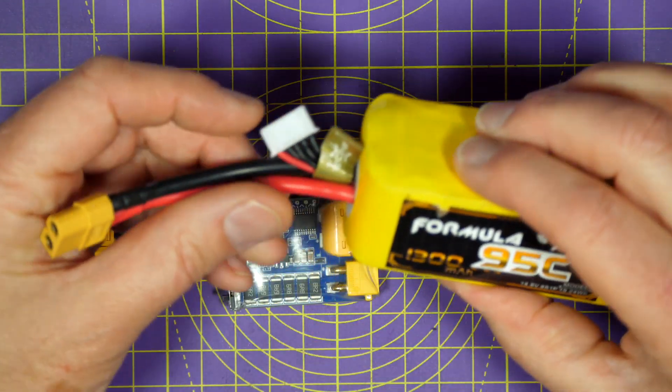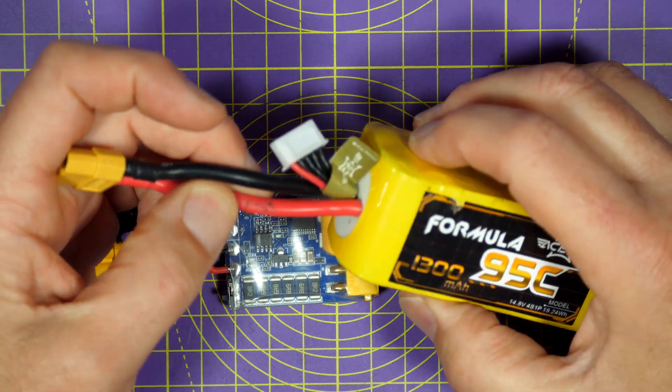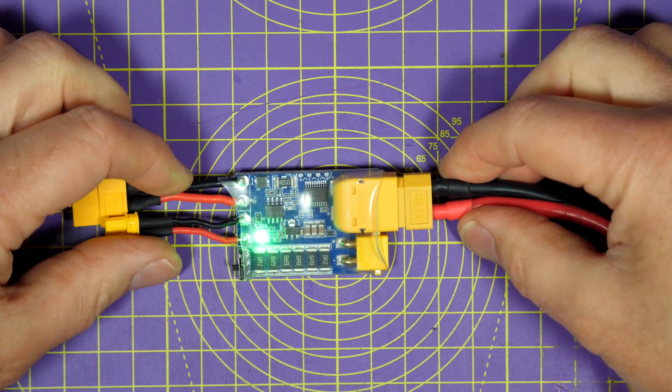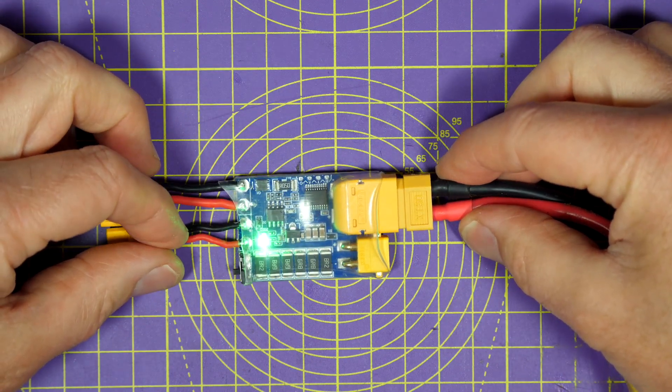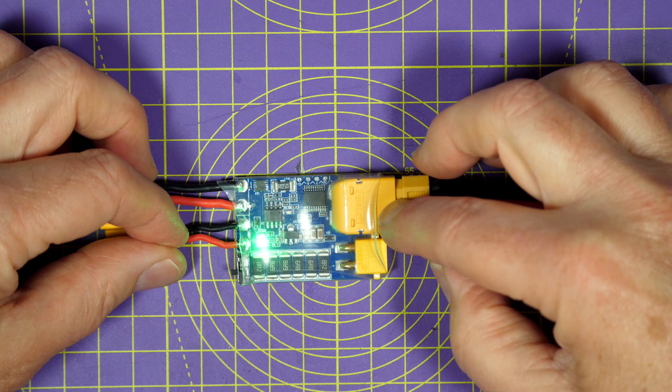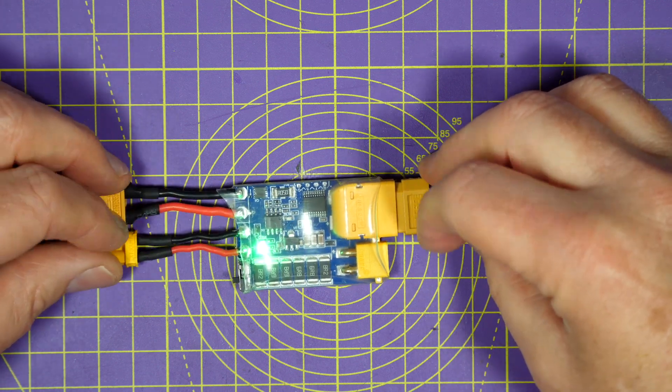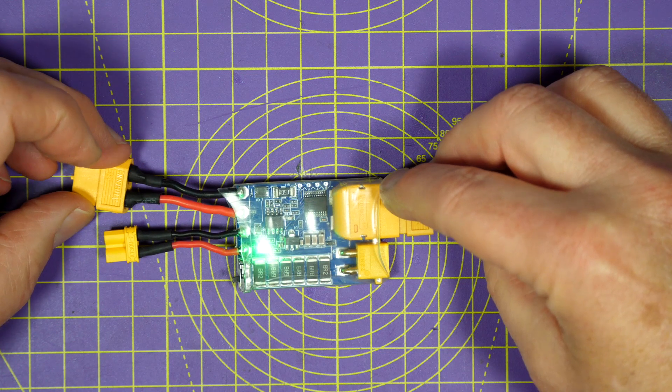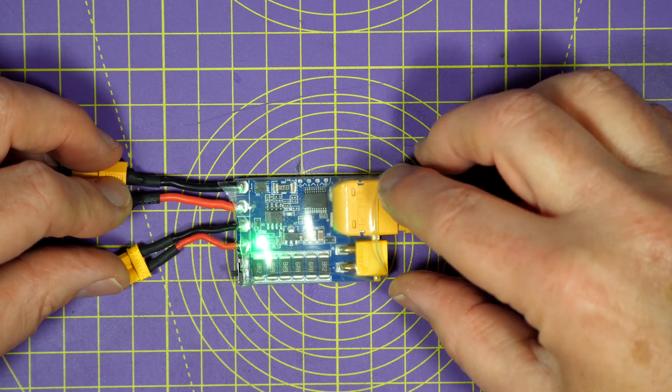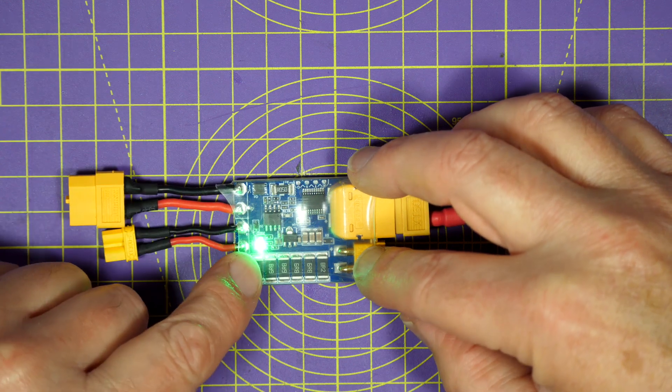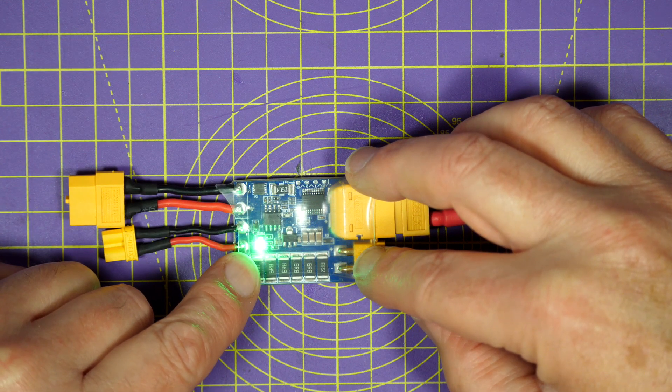So let's give this a try. This is a fully charged 4S battery. You basically plug it in and wait for it to power up. You can power this off 2S right up to 6S. And very conveniently it's got XT60 and XT30 connectors, so it'll be good for your whoops and toothpicks as well.